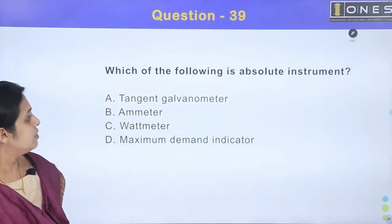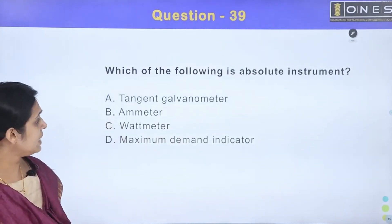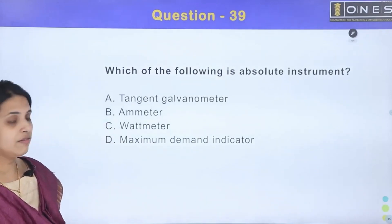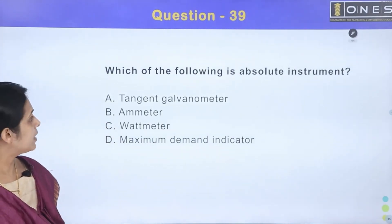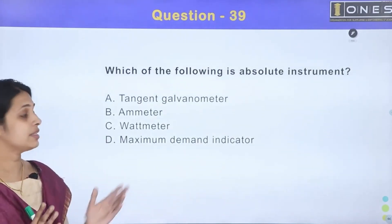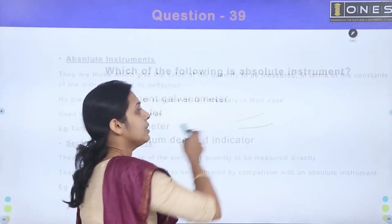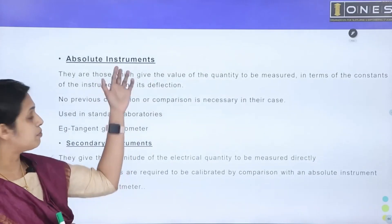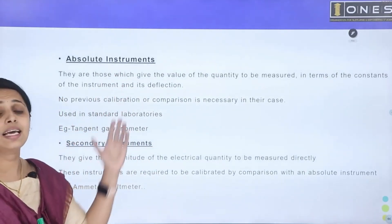Next question: Which of the following is an absolute instrument? Options: A) tangent galvanometer, B) ammeter, C) wattmeter, D) maximum demand indicator. Instruments are classified as absolute instruments or secondary instruments.